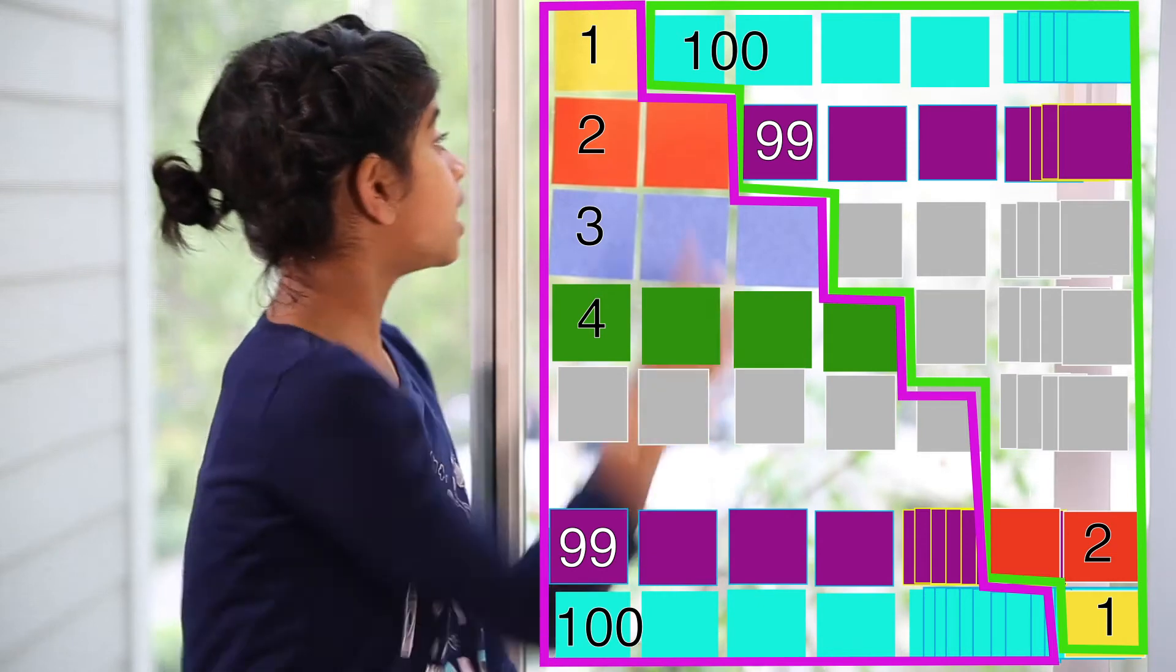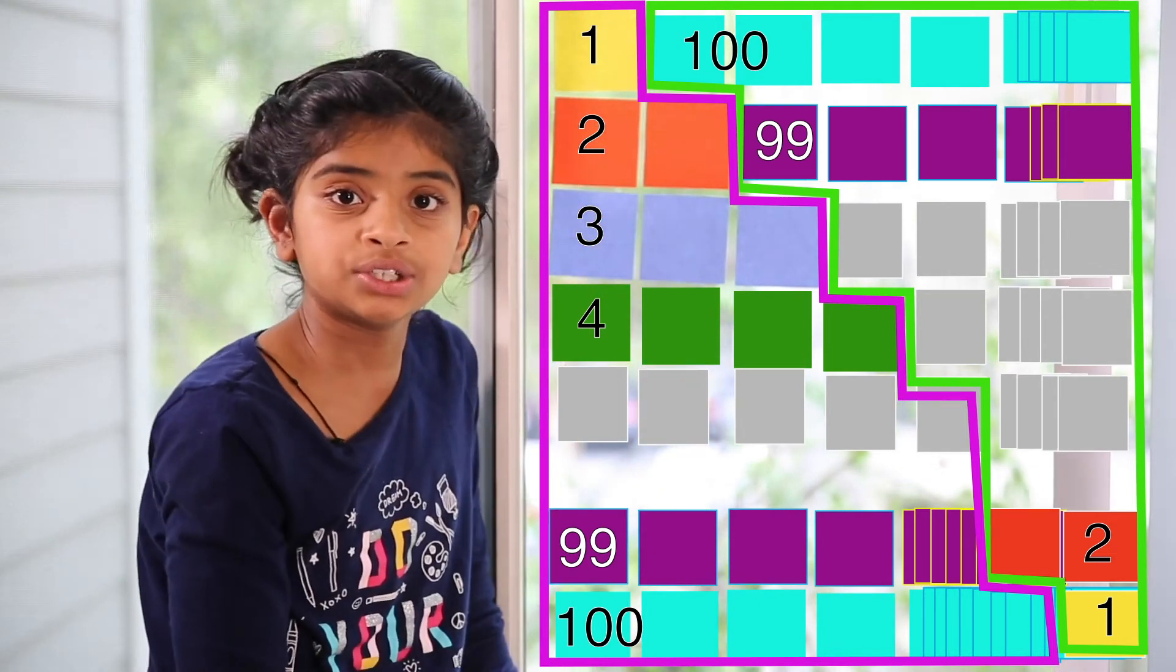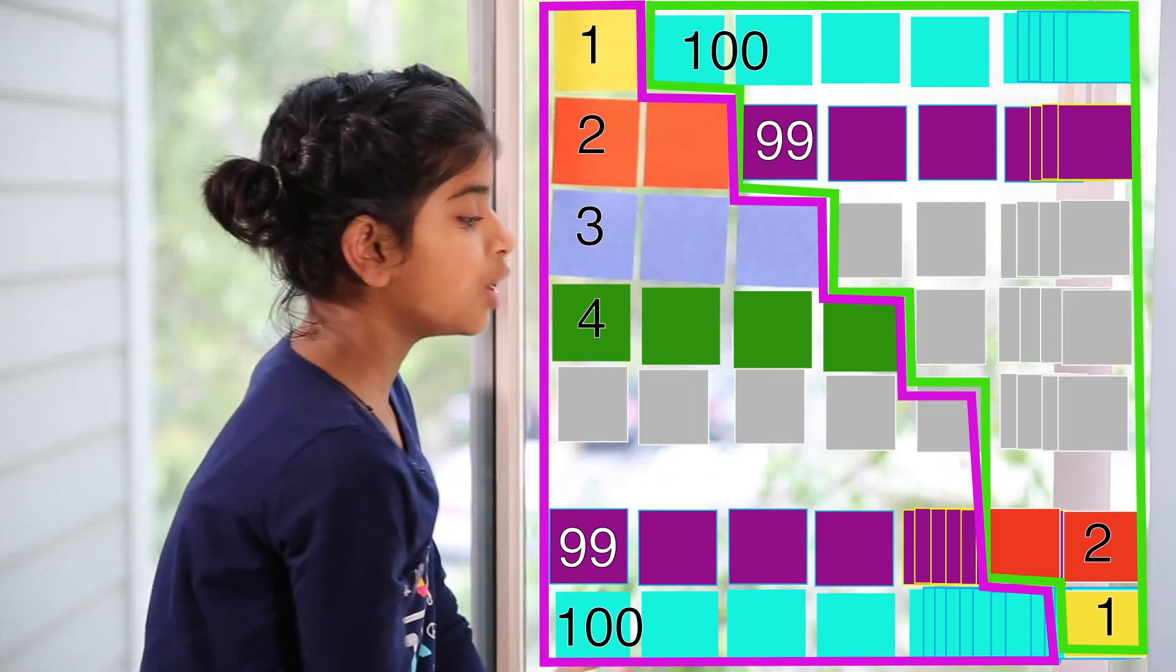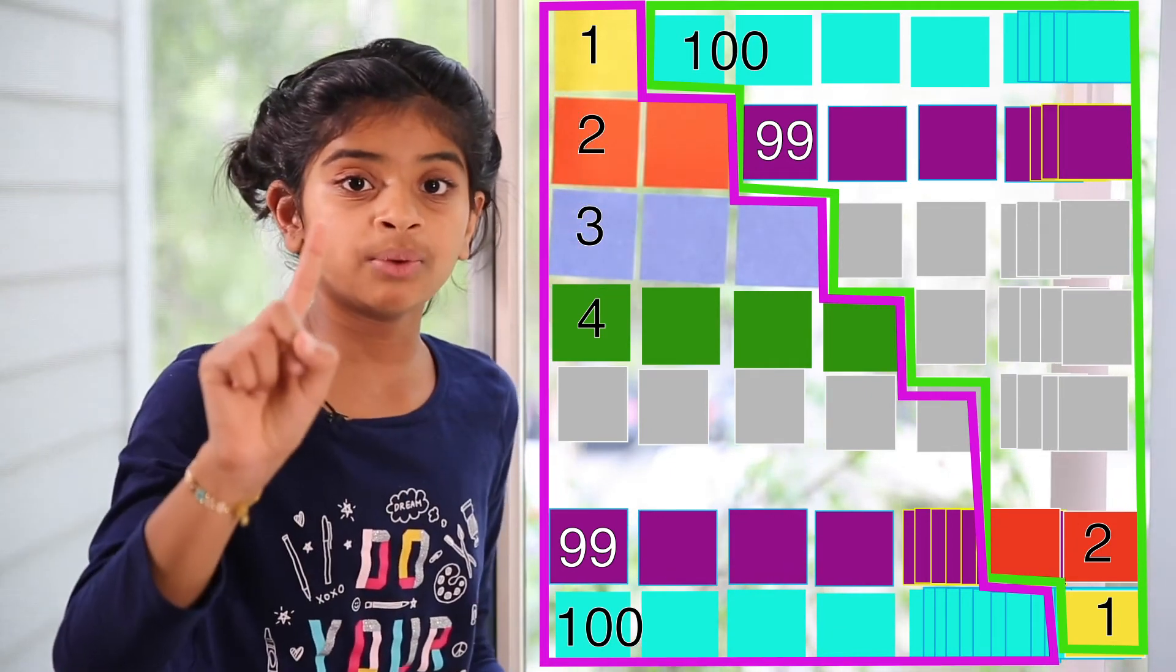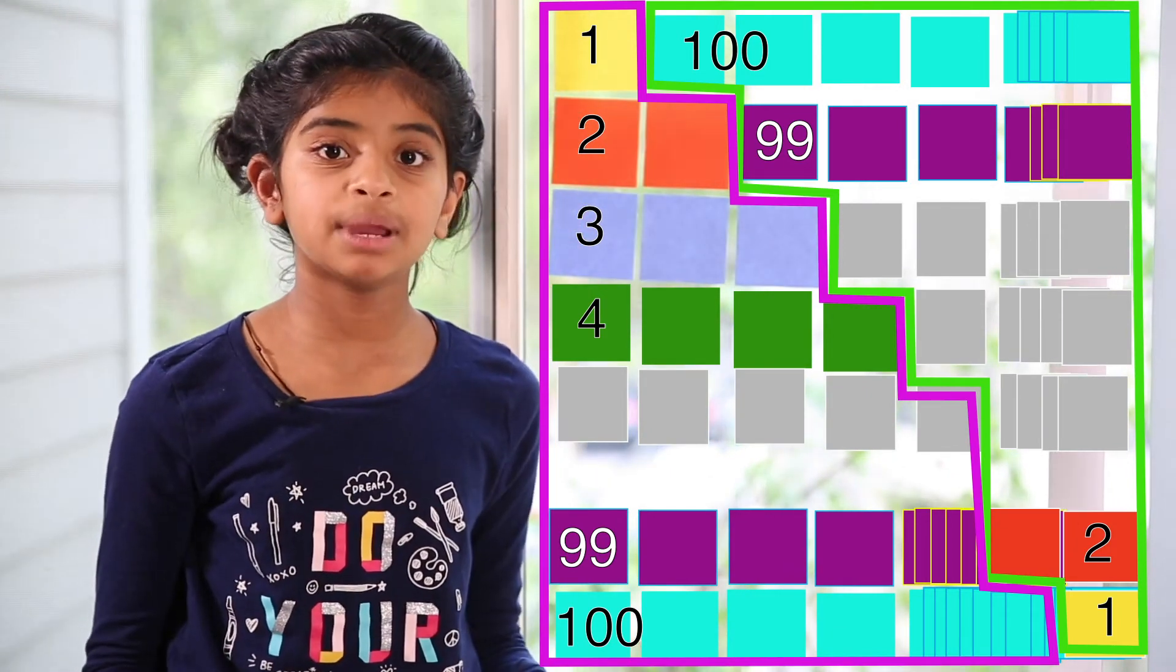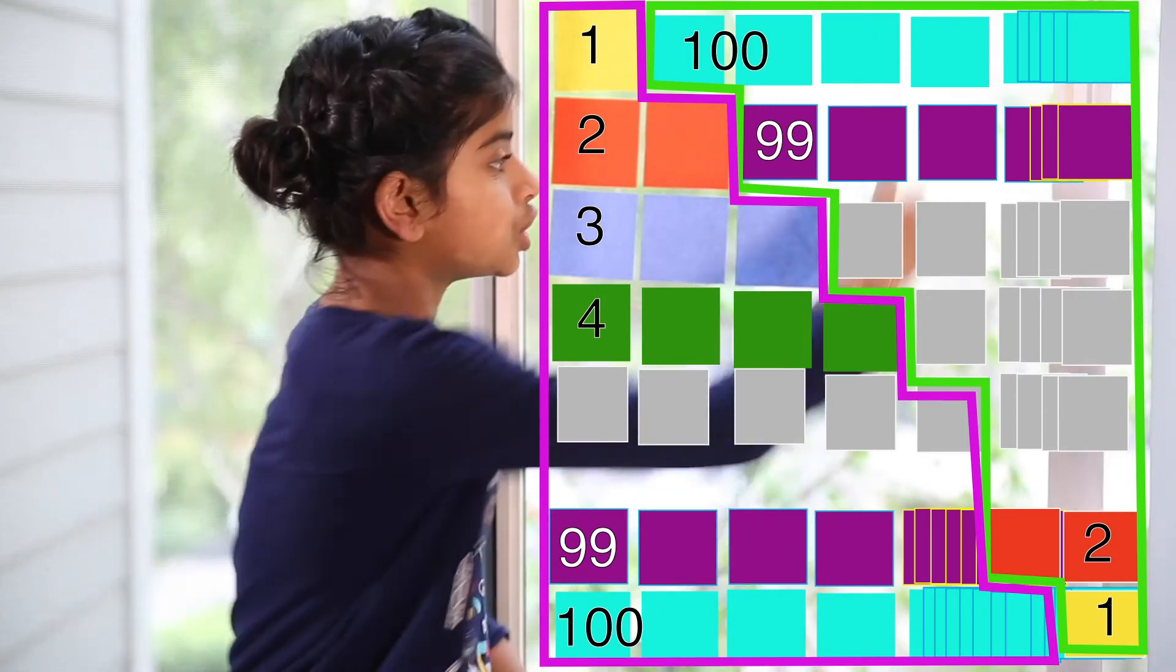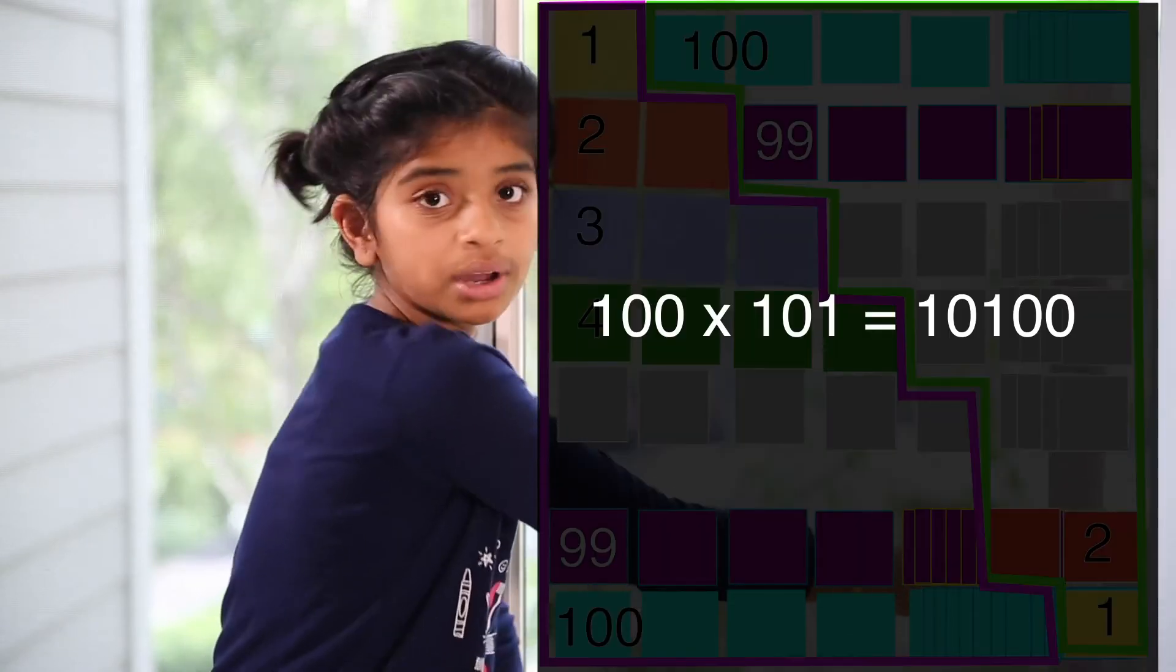Now we need to count the number of sticky notes in the whole shape. So there are 100 rows. Because we did 1 plus 2 plus 3 all the way to 100. That means there are 100 rows multiplied by 101. Why 101? Because of rule number 1. When we copy a shape and put it with the original shape, then we get one extra column over here.